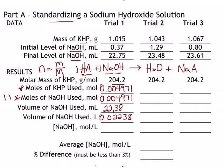Now we want the concentration of the NaOH. The units suggest what to do: take your moles and divide by your liters. The formula is C equals moles divided by volume, where volume is in liters. Taking 0.004971 moles divided by 0.02238 liters, we get a concentration of 0.2221 molarity, keeping four significant digits.